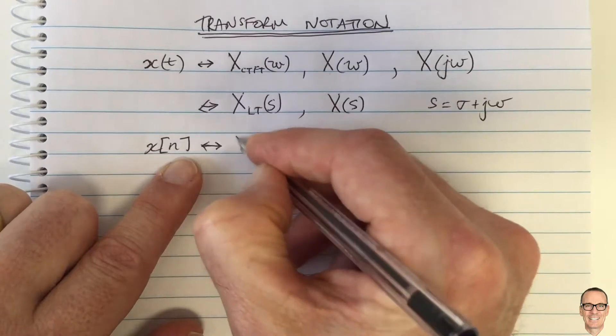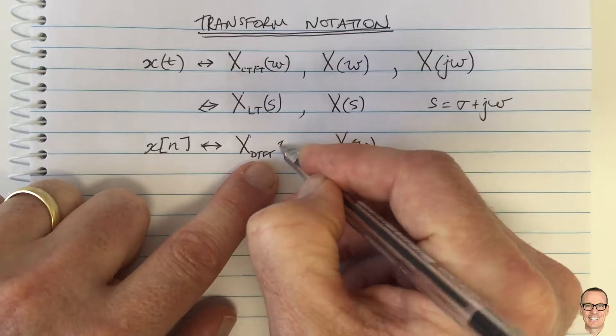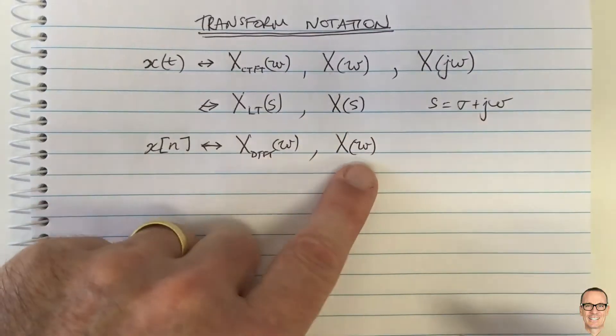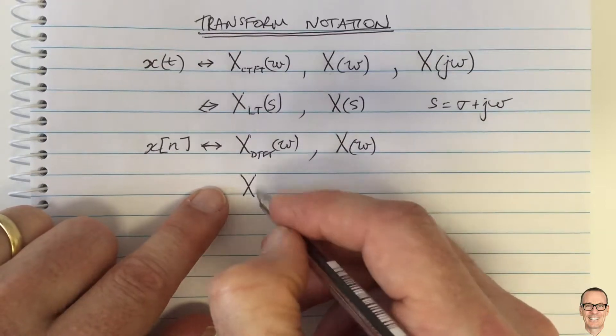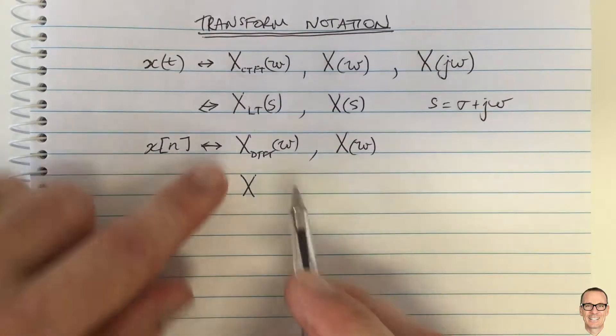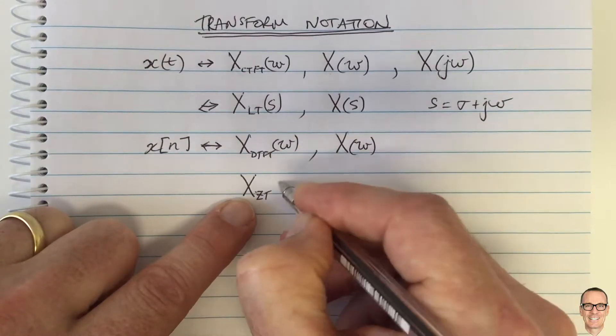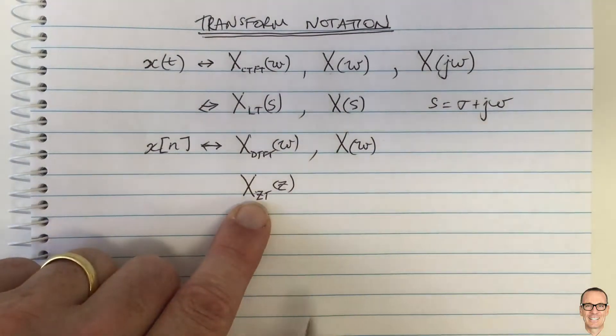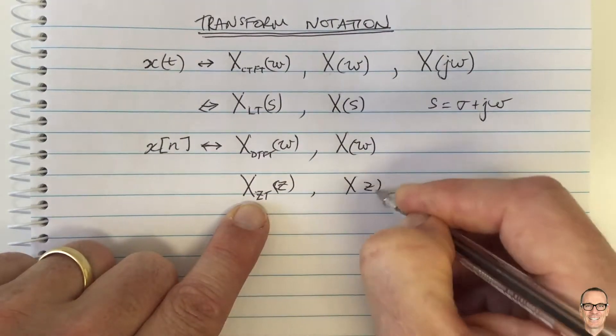So again, really what we should write is capital X discrete time Fourier transform. But we don't. There's another transform, which is the Z transform, which is analogous to the Laplace transform, but for discrete time. So we really should call this X Z transform, which is a function of Z. But often it's just written X of Z.